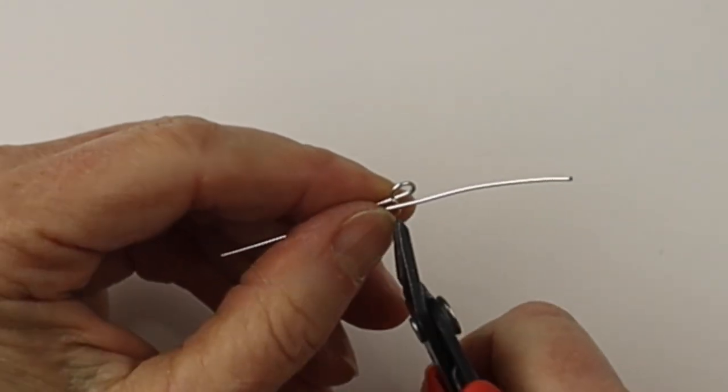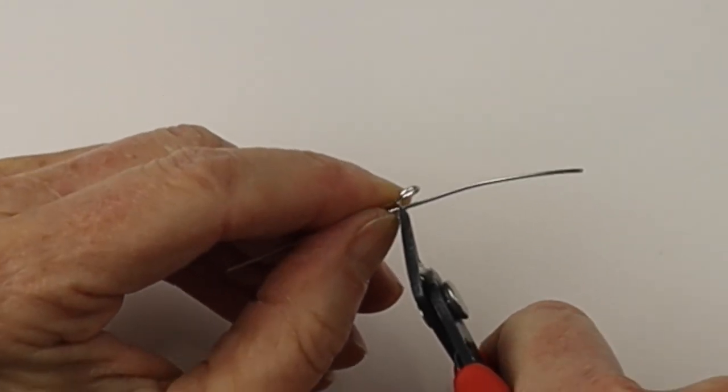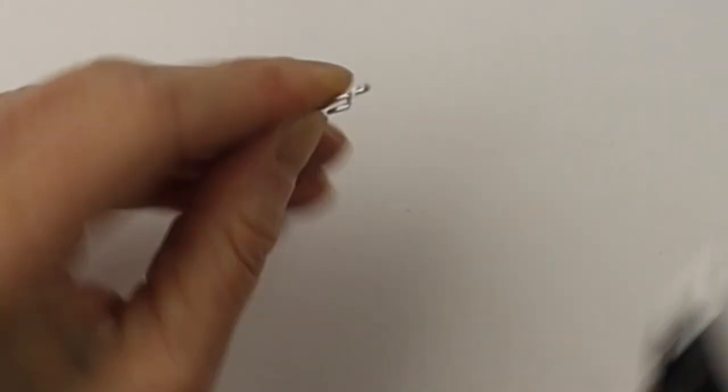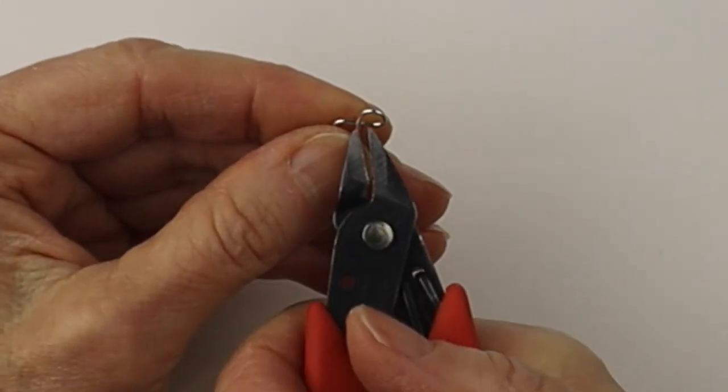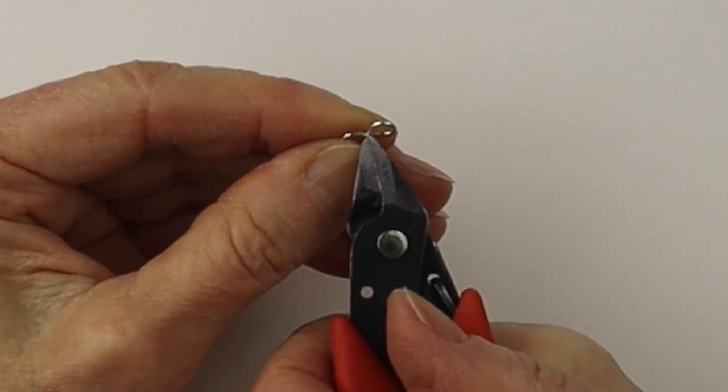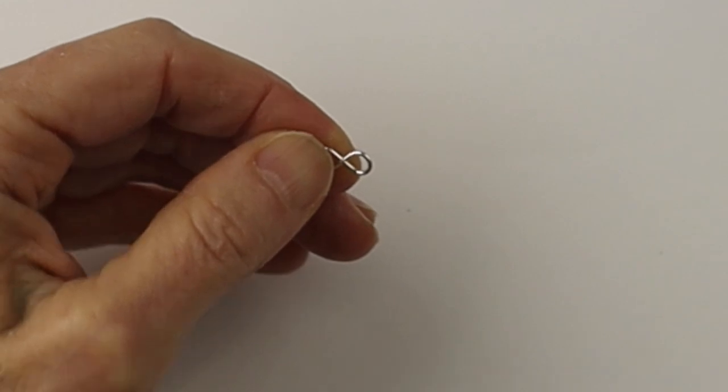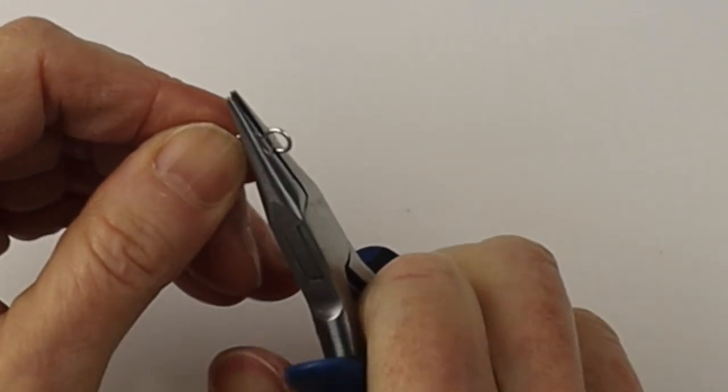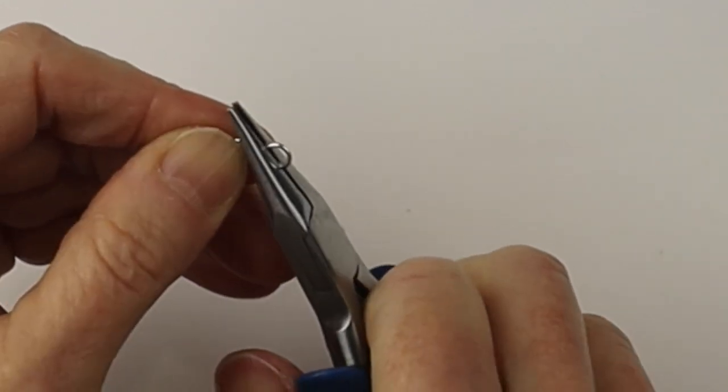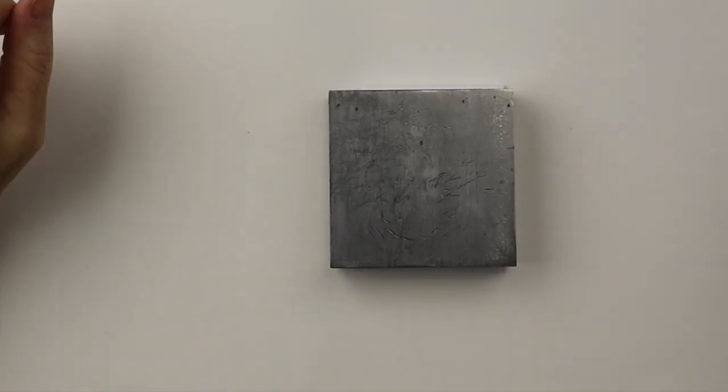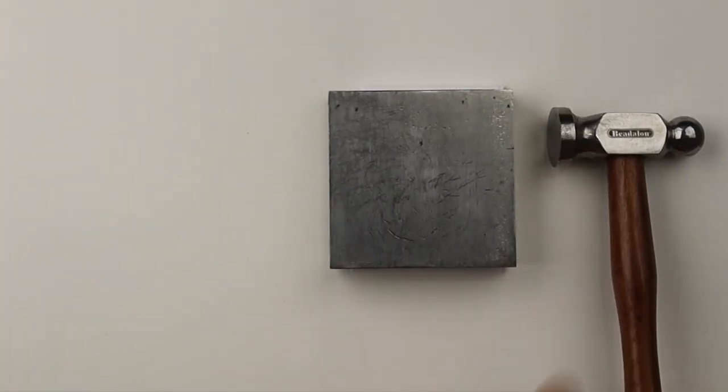At least you know they're all going to be exactly the same size and you see that line goes straight across. Then you cut it with the flush cutters, so we're just going to cut it right in there so it'll sit flush. Flip it and cut the other one so it's nice and flush. Then we can get our flat pliers to push the wires down.